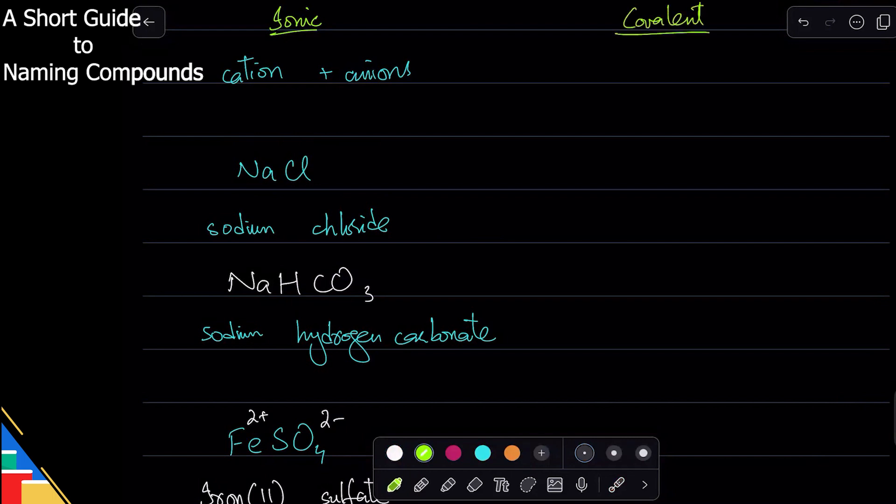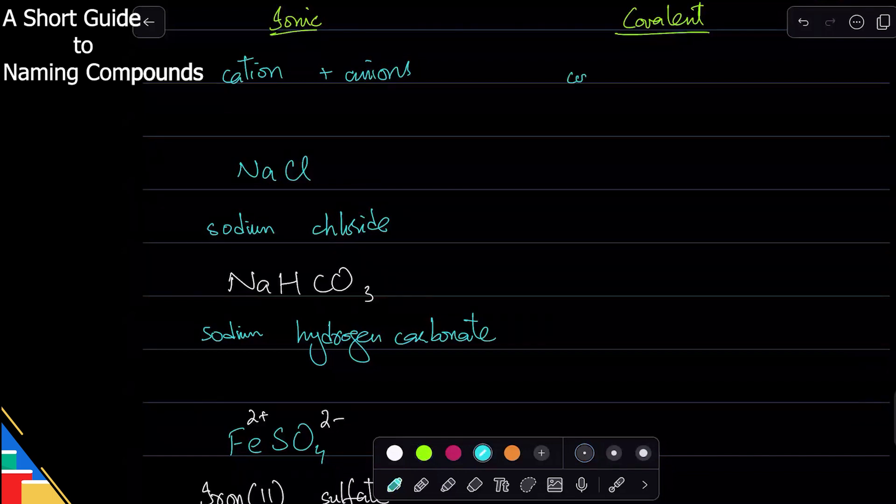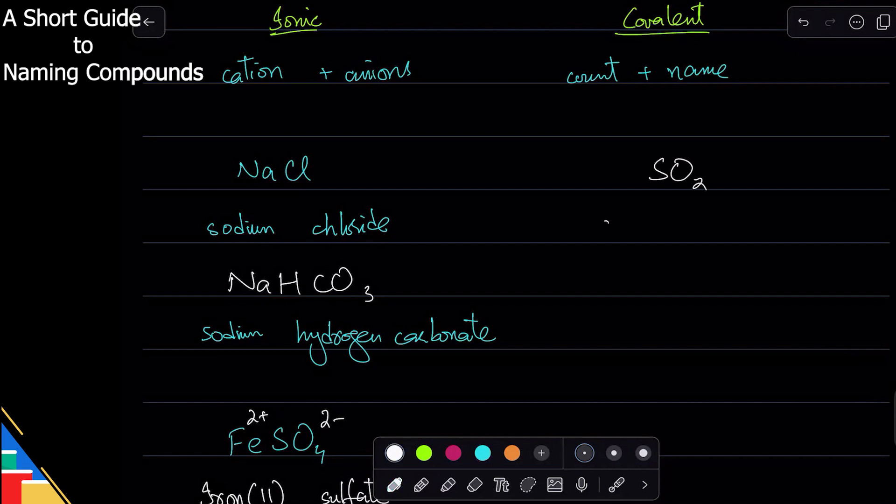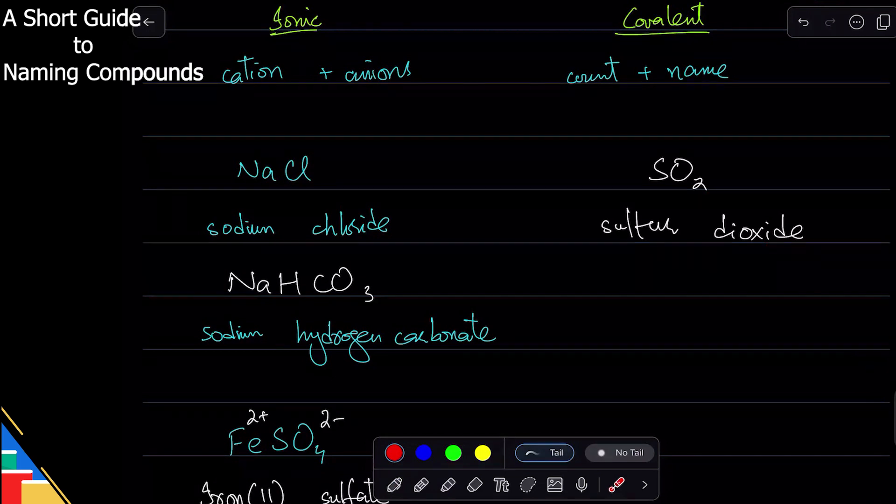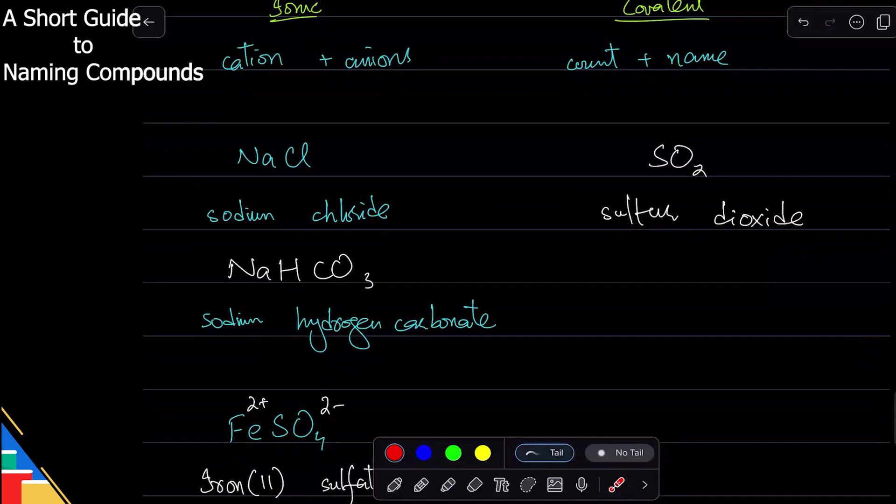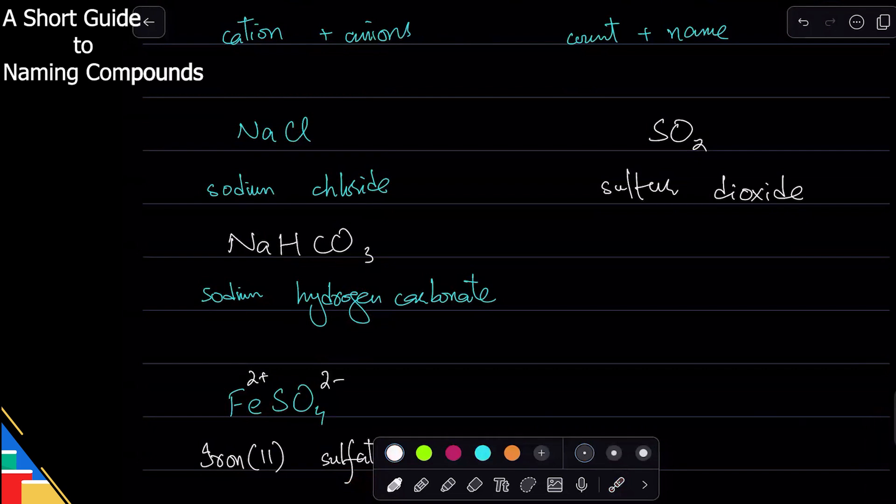What about covalent compounds? That's even easier. For covalent compounds you simply count the atoms and name them. For example, SO2: there's sulfur, and two oxygens, so dioxide. Usually at the end of the name we put -ide. Similarly, SeCl4 will be selenium tetrachloride.